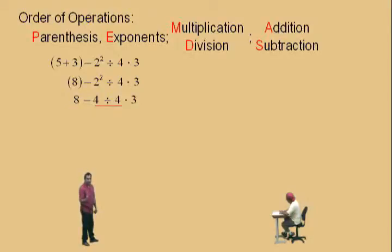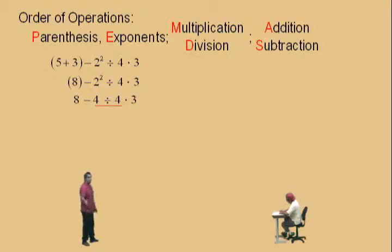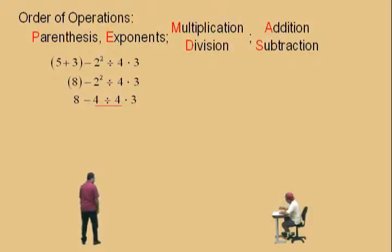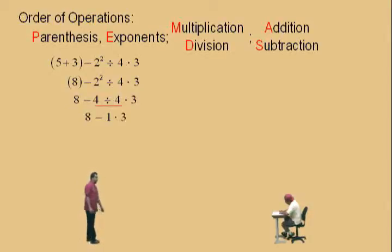And that's not a negative 4. It's 8 subtract 4 divided by 4 times 3. So we have to do the 4 divided by 4 first. What's 4 divided by 4, Charlie? 1. That's 1 — that's an easy one. Bring down your work: 8 subtract 1 times 3.